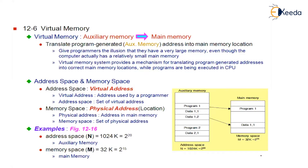Let us first understand what virtual memory is. What is virtuality? Virtuality is illusionary — we think that something is existing, but actually in reality it won't exist. Similarly, virtual memory is an illusionary memory.